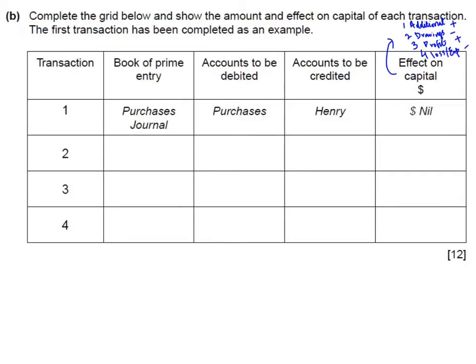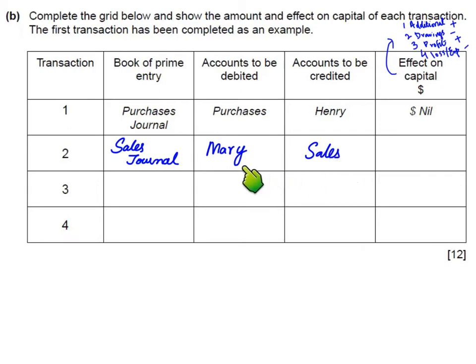Transaction 2: sold goods costing 300 to Mary for a selling price of 500 on credit. The book is the sales day book. Sales account is credited (goods leaving the business) and Mary's account is debited (customer is an asset, increasing by debit). We sold goods that cost 300 for 500, earning a profit of 200, which increases capital by 200.